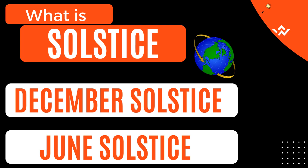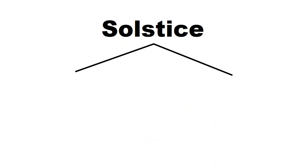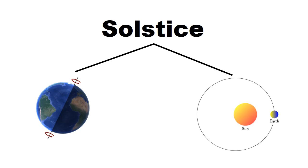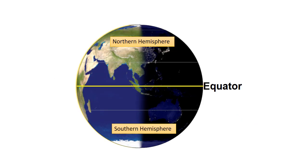Like equinox, solstice is also a result of two things: Earth's tilt and its orbit around the sun. Before understanding the solstice, first understand the tropics, which circle the earth at 23.5 degrees north and south. The tropics are lines of latitude.